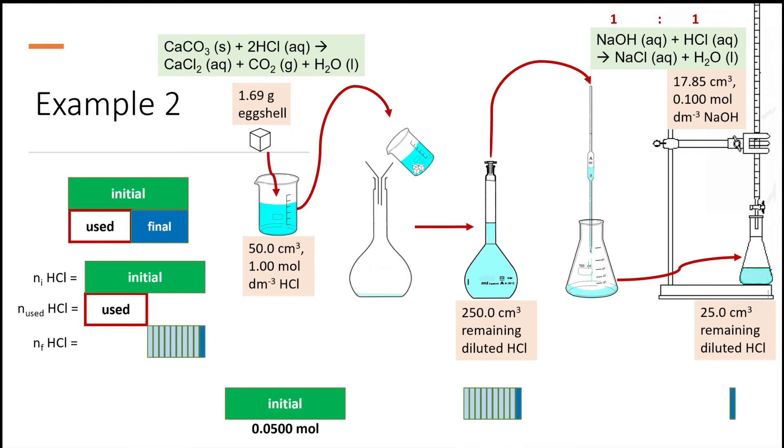Only 25 ml is titrated with sodium hydroxide, and from the given volume and concentration of sodium hydroxide we can find its mole which is 0.001785 mole. Because the molar ratio of sodium hydroxide and hydrochloric acid is 1:1, the number of mole of HCl is the same with the mole of sodium hydroxide.